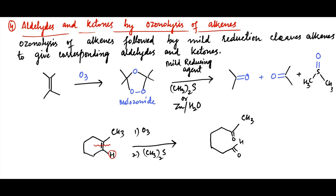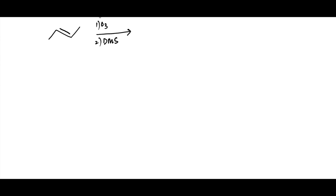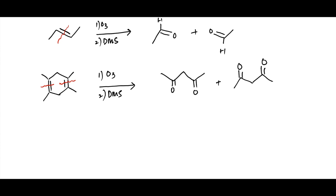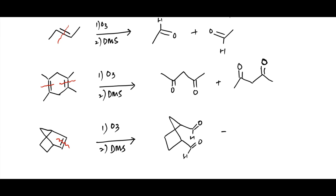The double-bonded carbon having at least one hydrogen is oxidized to an aldehyde group, whereas the one having no hydrogen attached is changed into a keto group. For example, consider trans-2-butene: the products of ozonolysis followed by reduction can be written by breaking the carbon-carbon double bond and restoring the carbon-oxygen double bond on both carbons, therefore two acetaldehyde molecules are formed. Similarly, the products of ozonolysis of a cyclic diene can be written by breaking both carbon-carbon double bonds and restoring carbon-oxygen double bonds on all four carbons. Both alkene carbons having one hydrogen attached to each are oxidized into aldehydes.